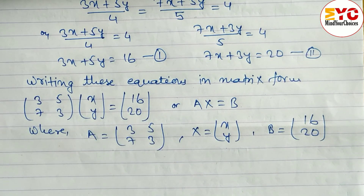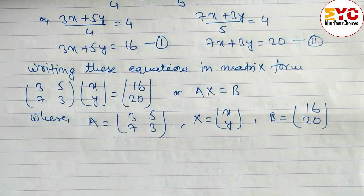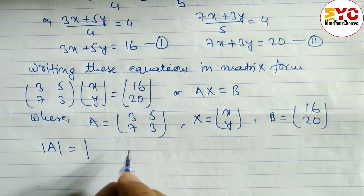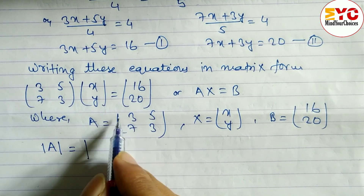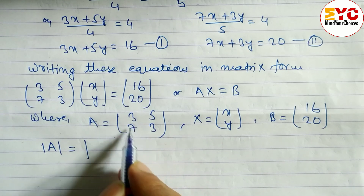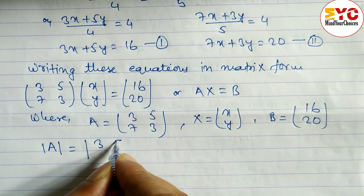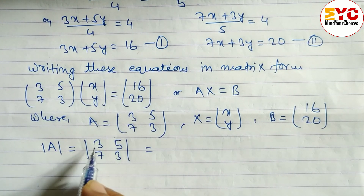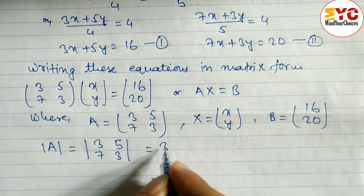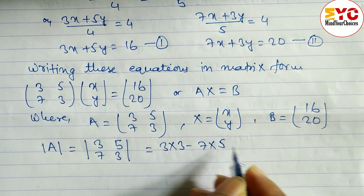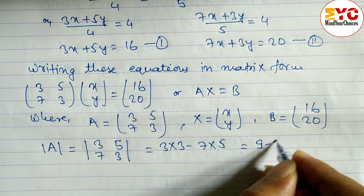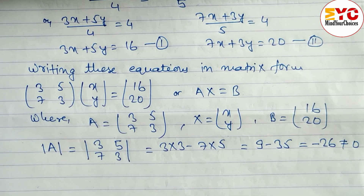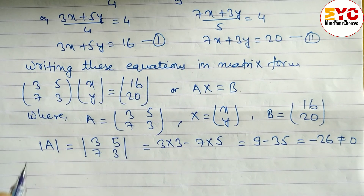After this, we have to check whether A is singular or non-singular by finding the determinant of A. We write all elements inside vertical lines. The determinant is 3×3 minus 7×5, which equals 9 minus 35, equal to minus 26. Since it is not equal to zero, the given equations have a unique solution.